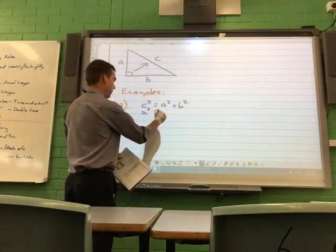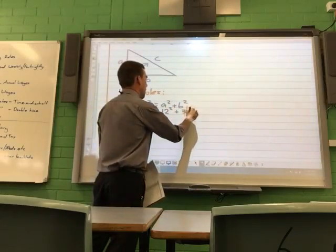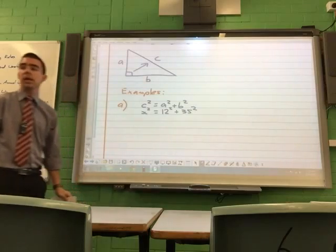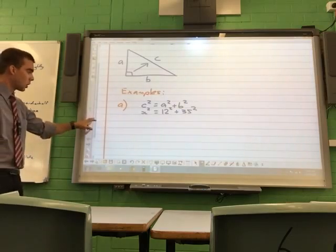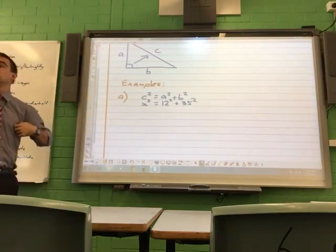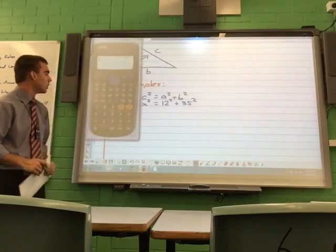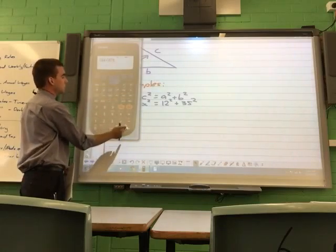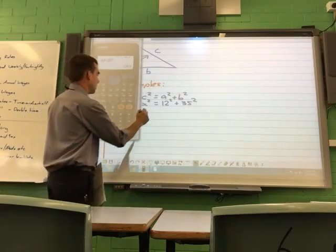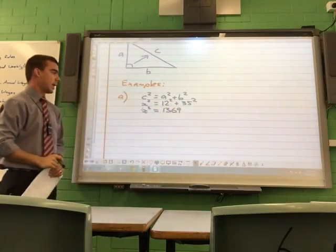So, we have x squared. It doesn't matter the order because we are adding. We can add in any order we like. So I can write it as 35 squared plus 12 squared if I wish. It does not matter. As well as multiplying, we can also multiply in any order we like. Saying when we're doing subtraction or when we're doing division, we have to do it a set way. Alright, so 144 plus 35 squared. So x squared is 1, 3, 6, 9.